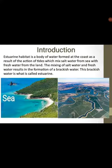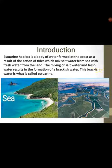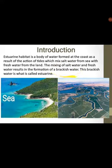Estuarine habitat is a body of water formed at the coast as a result of the action of tide, which mixes salt water from the sea with fresh water from the land. The estuarine habitat is a mixture of salt water from the marine habitat and fresh water from the freshwater habitat. The mixing of salt water and fresh water results in the formation of brackish water, which is another name for the estuarine habitat.